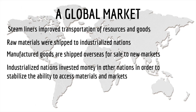As countries become much more industrialized, we develop a global marketplace. Now that we have steam liners and larger, more powerful boats, we can transport goods across oceans to other countries faster and more efficiently — carrying supplies and materials, finished goods for sale, and picking up raw materials to bring back home. Industrialized nations are going to dominate this quickly developing world market. They will invest money in other countries to stabilize them and access materials and markets — leading into our next unit on imperialism, where industrialized countries seize control of resources and markets.